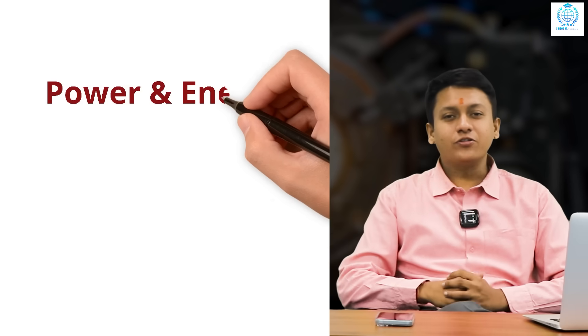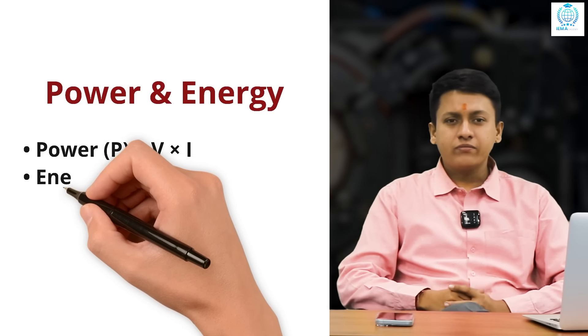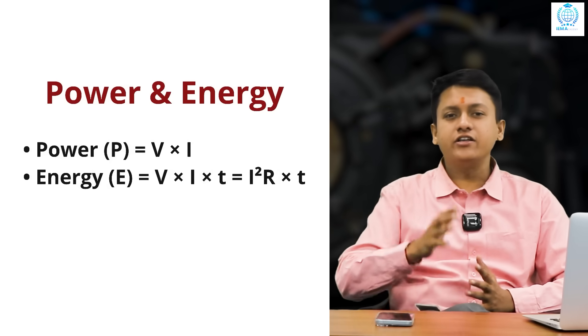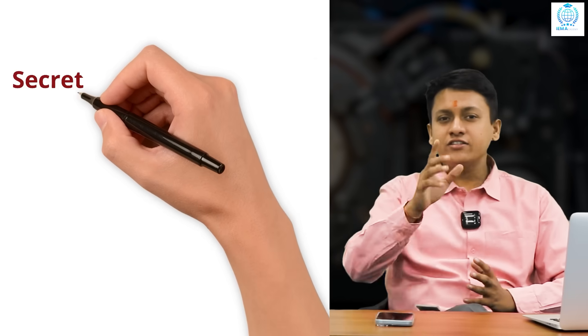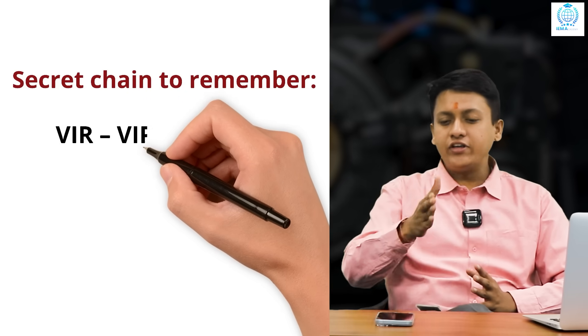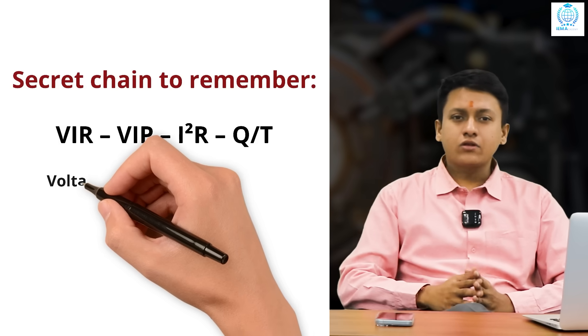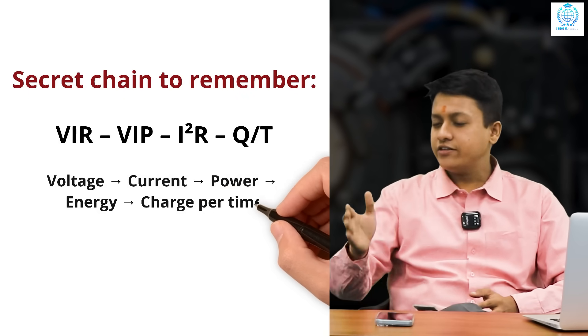power and energy. This is a quick bonus for you. Power P equals V into I. Energy E equals V into I into T, equals I square R into T. This is a secret chain to remember. V I R, V I P, I square R, Q by T. Voltage, current, power, energy and charge per time.